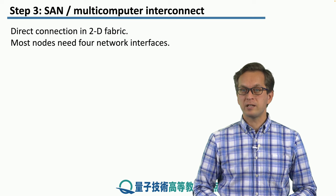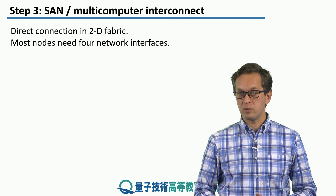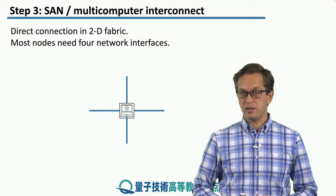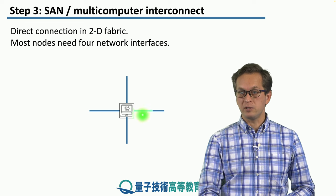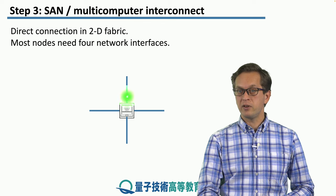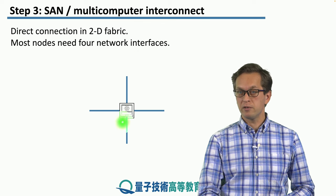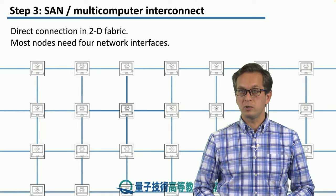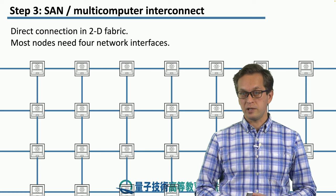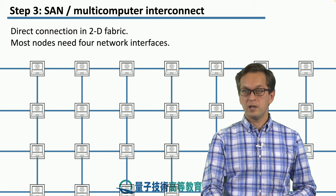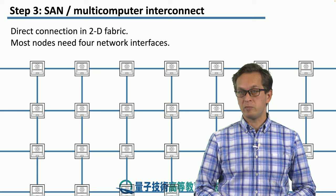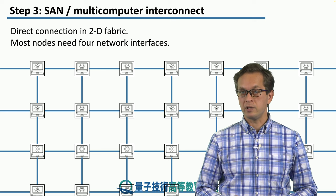A direct connection in a 2D fabric will look something like this. Most nodes need four network interfaces — an interface to talk to a neighbor to the north, to the south, to the east, and to the west. If you put all of them together, you get an array of computational nodes in a regular 2D pattern with nearest-neighbor connections or links.